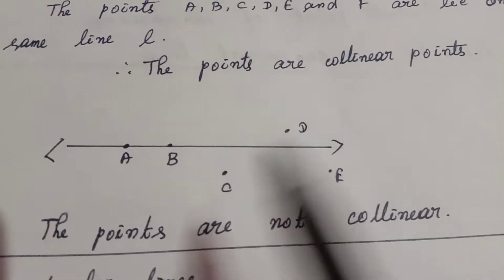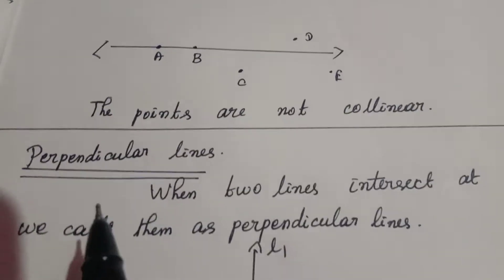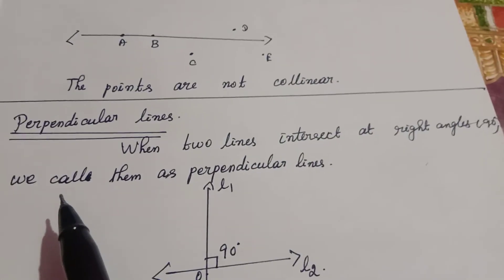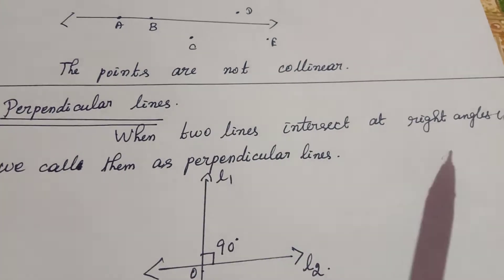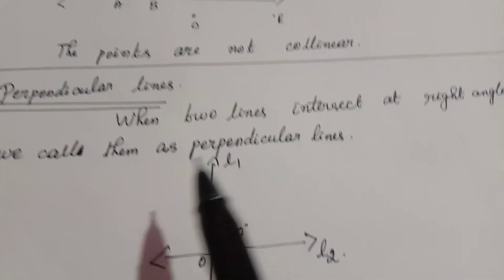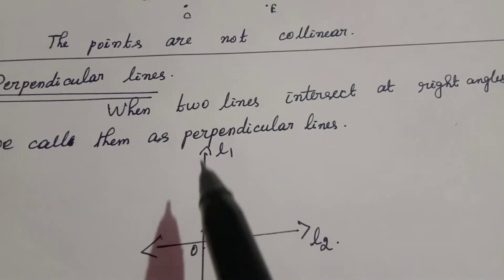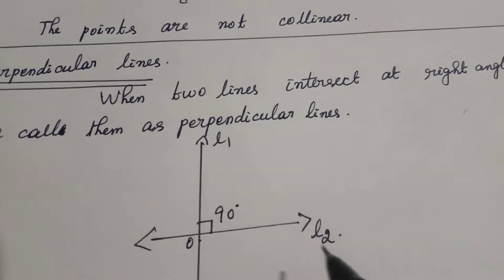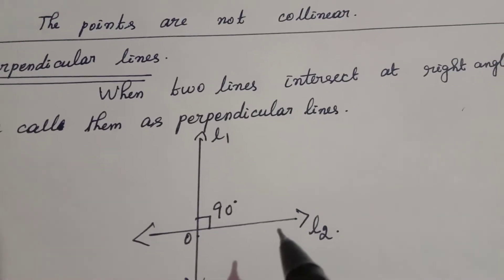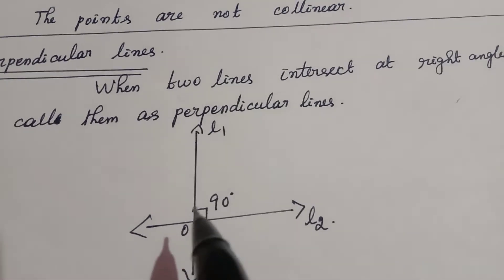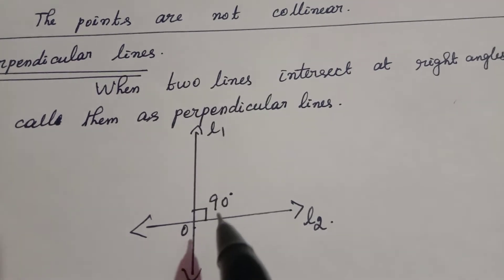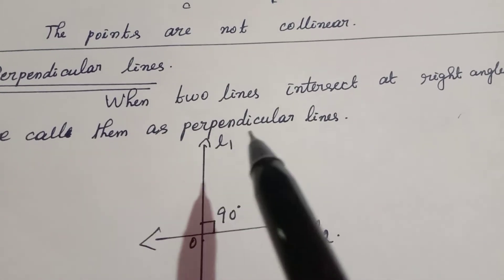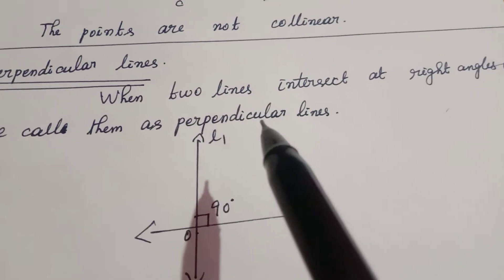Next, perpendicular lines. When two lines intersect at right angles — a right angle means 90 degrees — we call them perpendicular lines. Here, lines L1 and L2 intersect each other at 90 degrees, so they are called perpendicular lines.